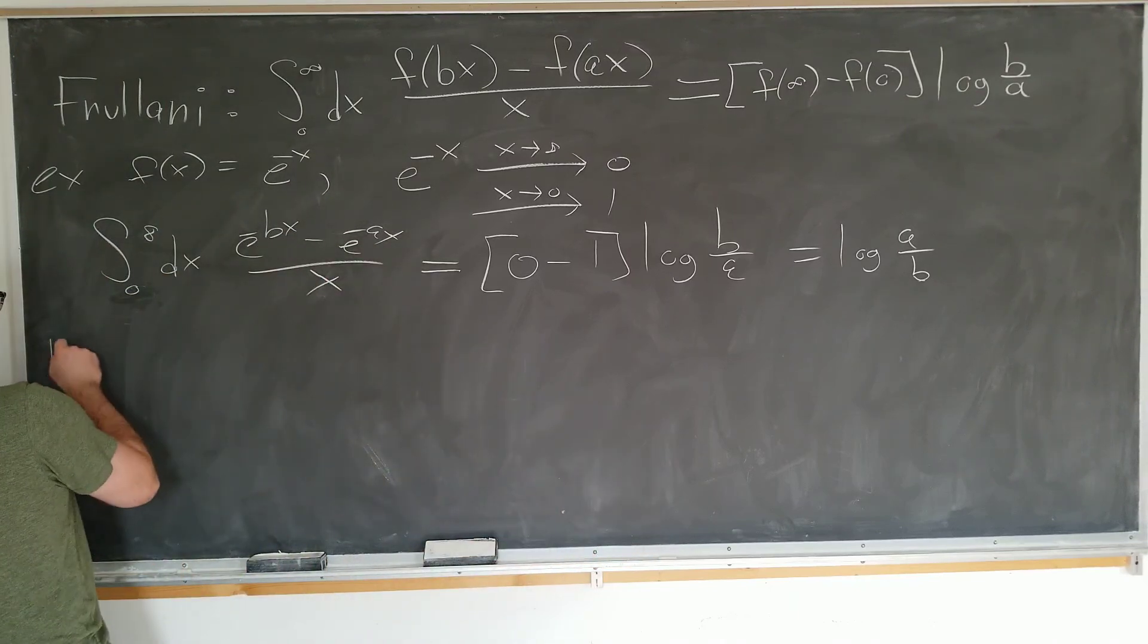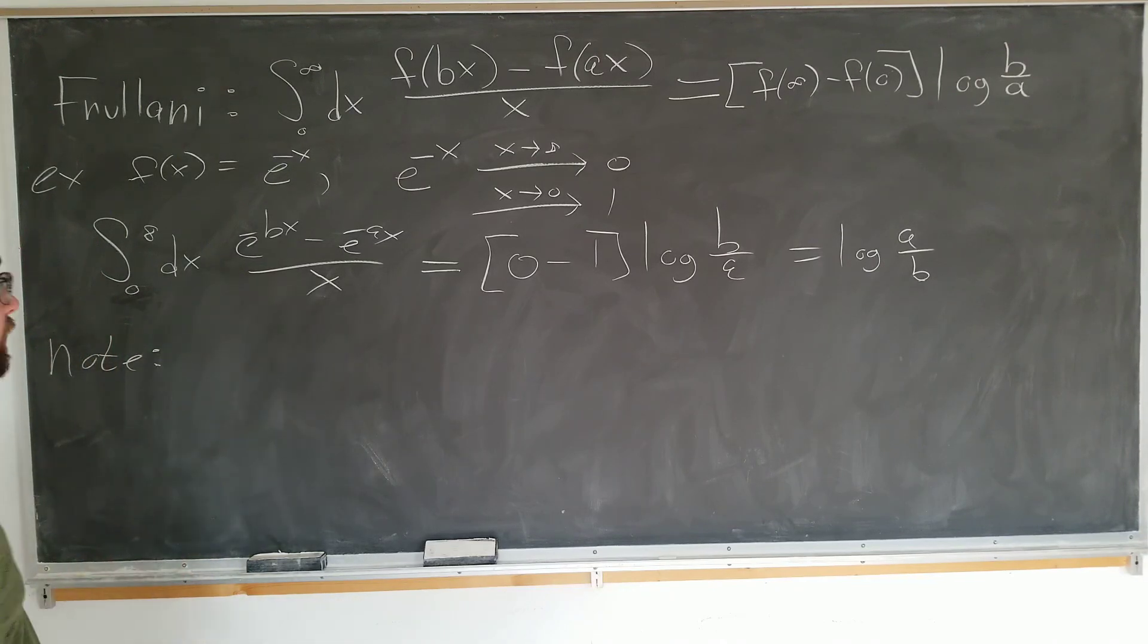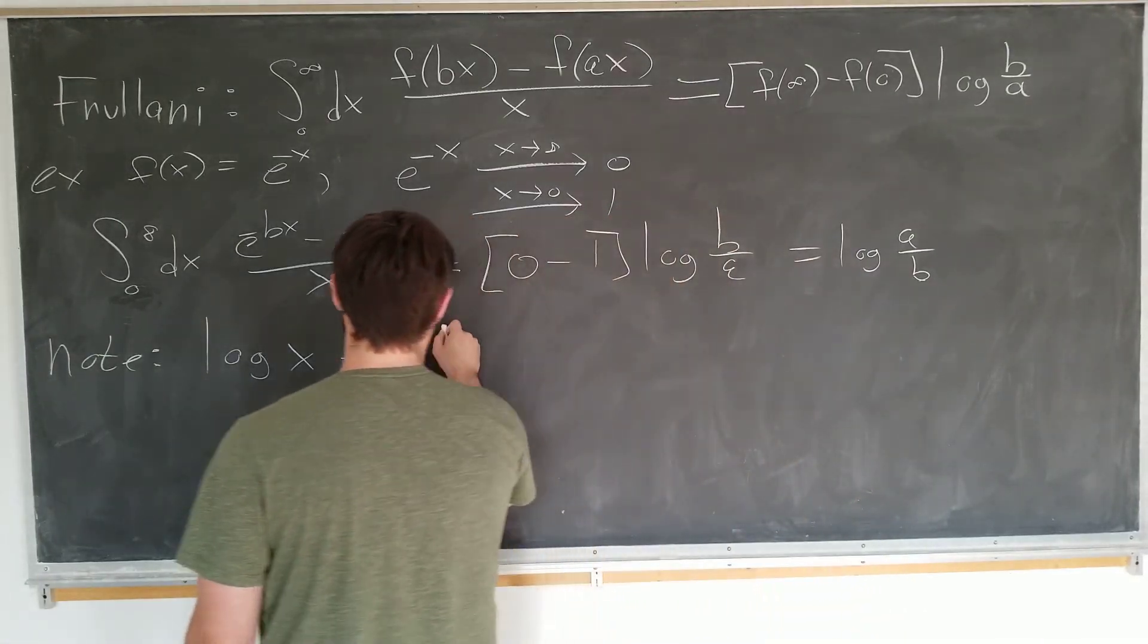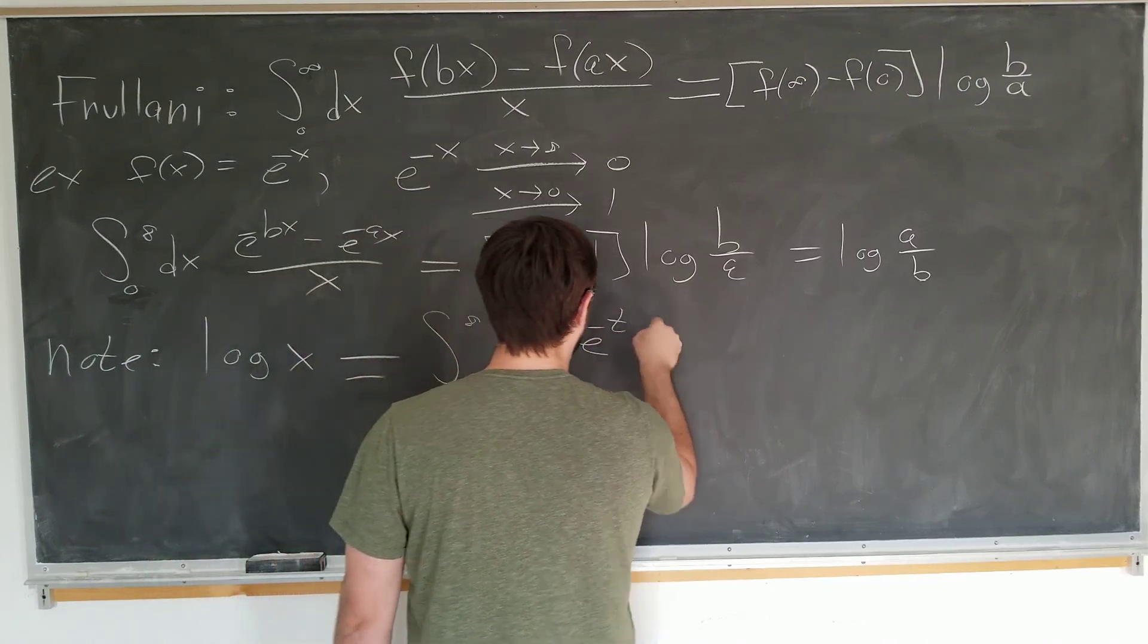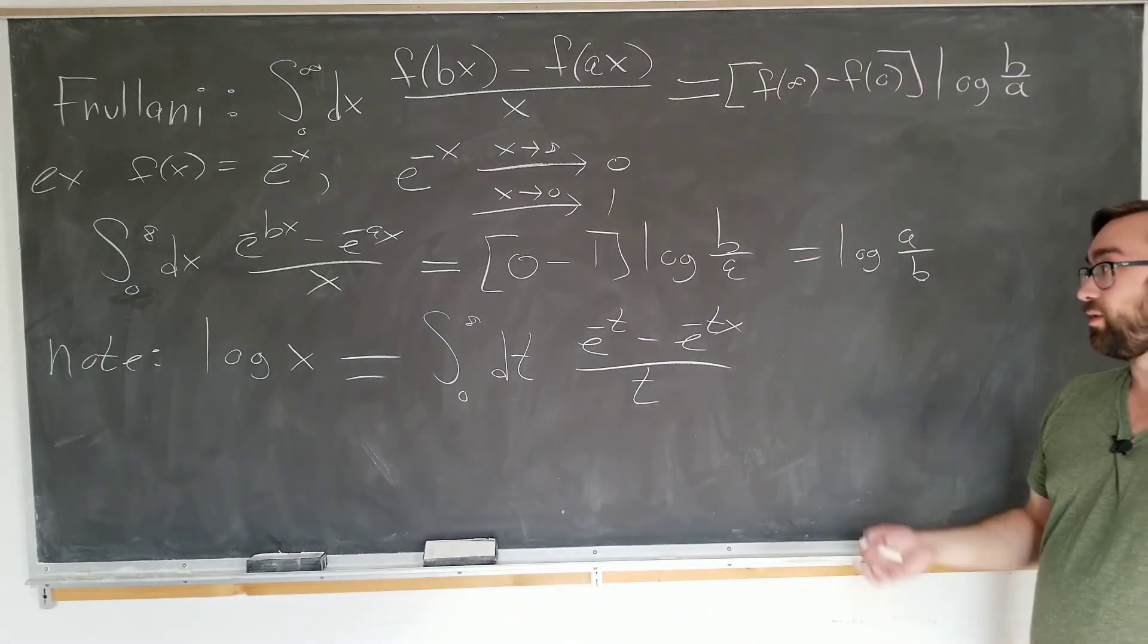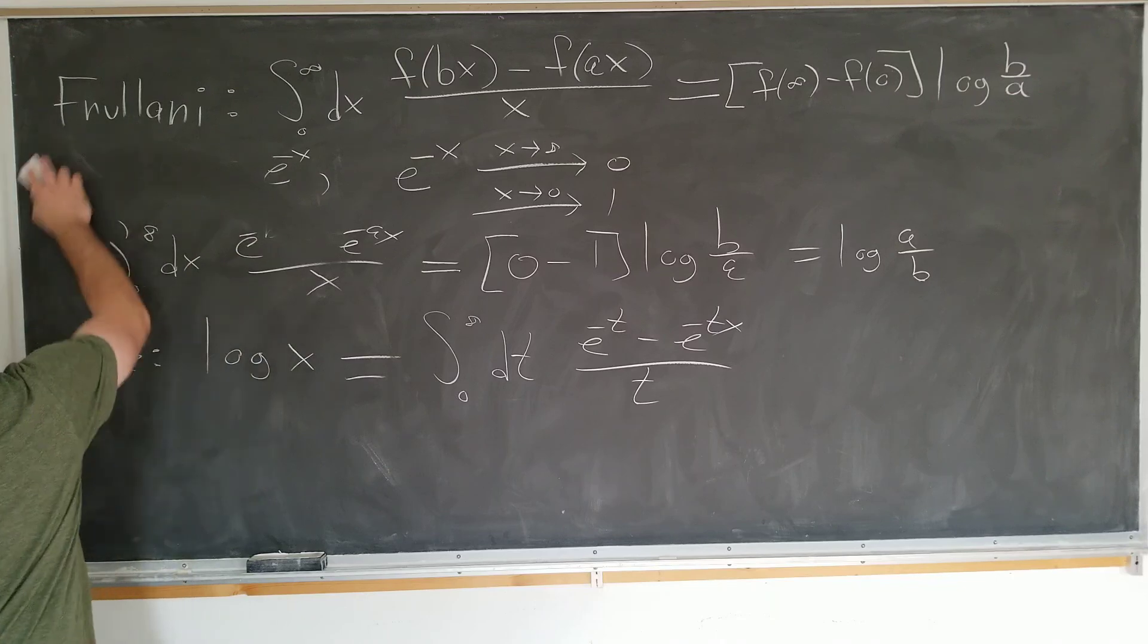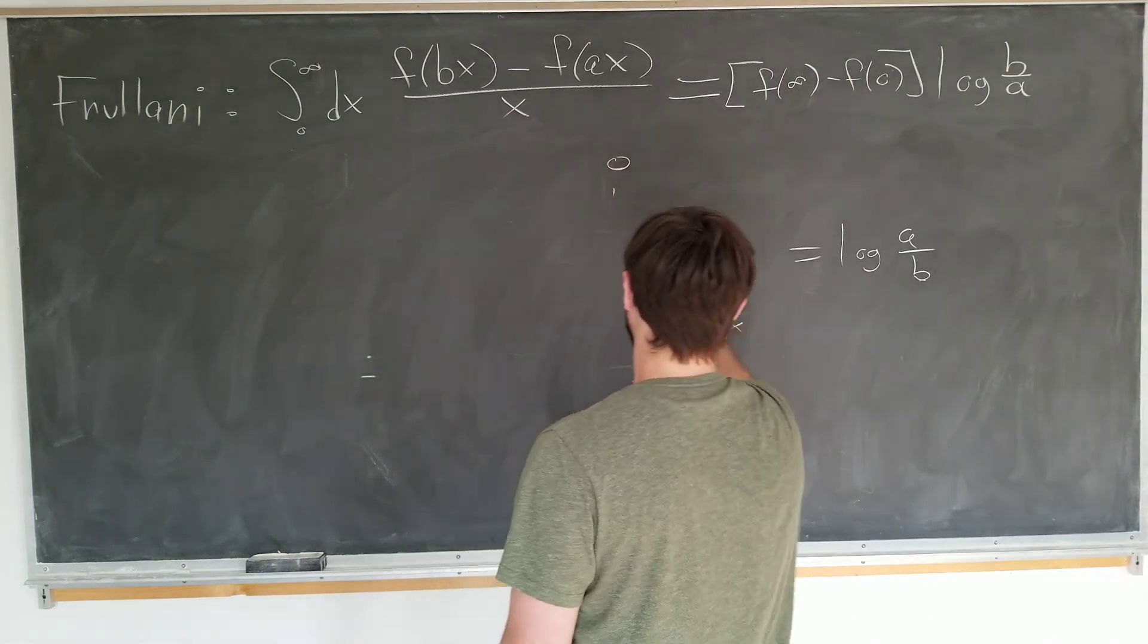But before I move on, we can also note that we can represent the logarithm function in a new way by using this formula. We can now write the log of a variable x, letting x be a, of course, and making a few other substitutions. Just going to be integral from 0 to infinity dt e to the minus t minus e to the minus tx over t. It's useful in analytic number theory, apparently. I haven't used it, but apparently can. So if it's useful to you, feel free to use it. You know how to derive it now.